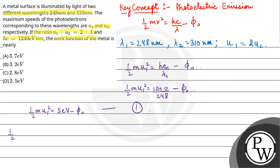Now for the other wavelength: ½mv² equals hc/λ2 minus φ₀. This will be equal to 4 electron volt minus φ₀. This is equation 2.